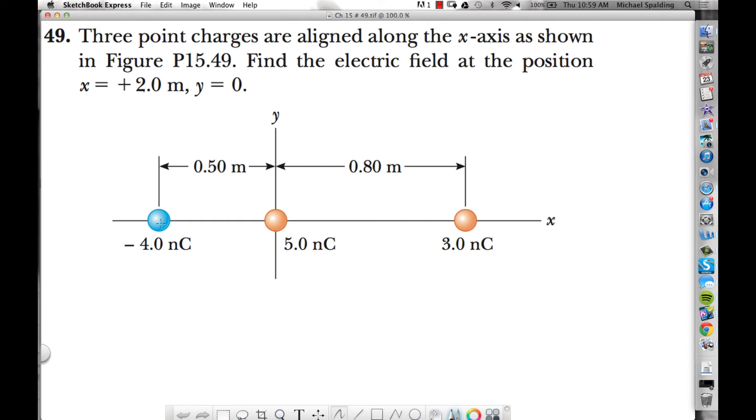Okay, so problem 49. We have a negative charge, negative charge, positive charge, positive charge. This question wants us to find the electric field at x equals 2, y equals 0. So that's a point like over here somewhere, right?